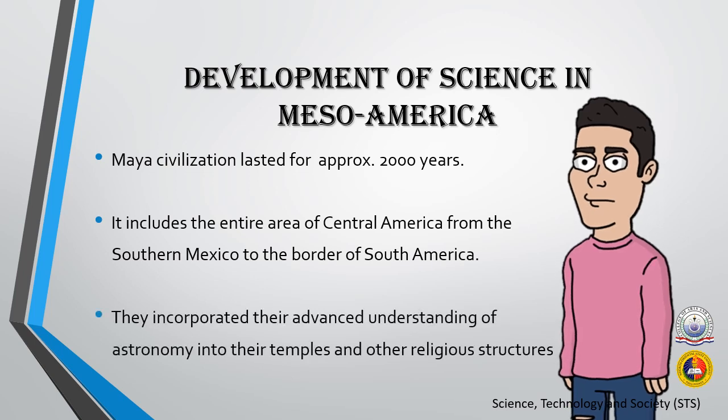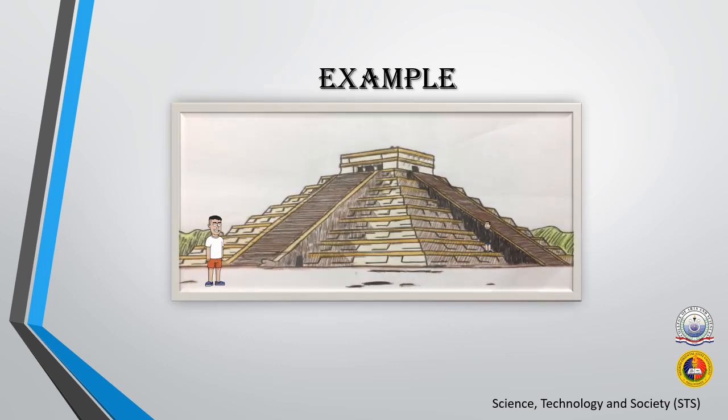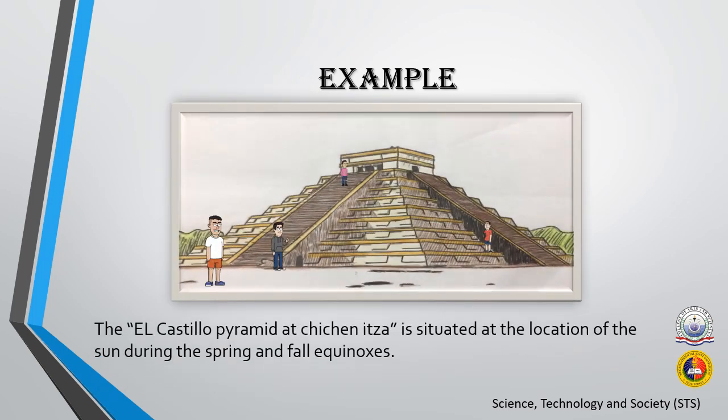The Maya incorporated their advanced understanding of astronomy into their temples and other religious structures. For example, the El Castillo Pyramid at Chichen Itza is situated at a location that aligns with the sun during the spring and fall equinox.